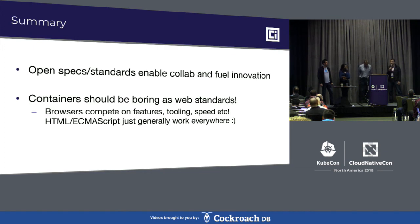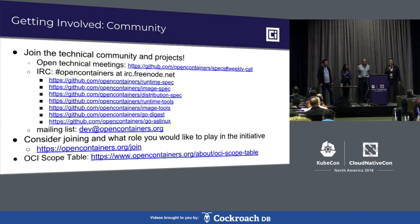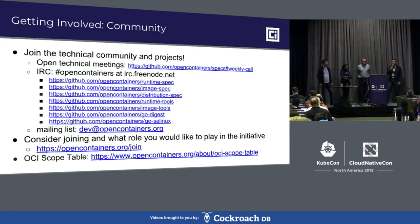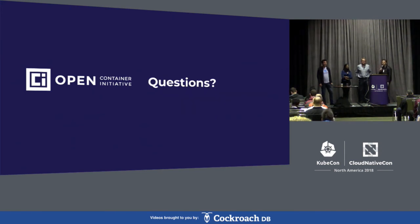If you want to get involved with the community, it's just like any other open source community — they host meetings, have repos, mailing lists, and so on. Please get involved if you're interested in this type of work. Or if you're actually using OCI in interesting ways, like the Firecracker work the AWS folks are doing, please share them with us. We want to document and learn about them. Thank you for listening, and we'll open it up to any questions.